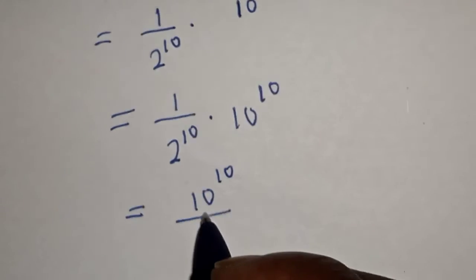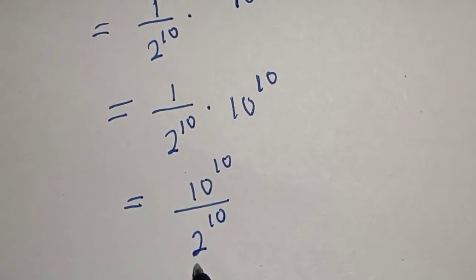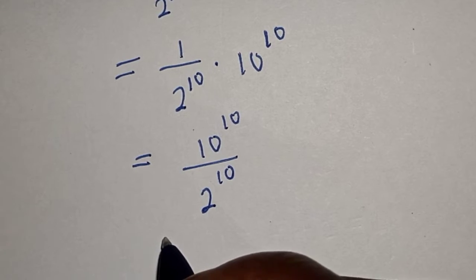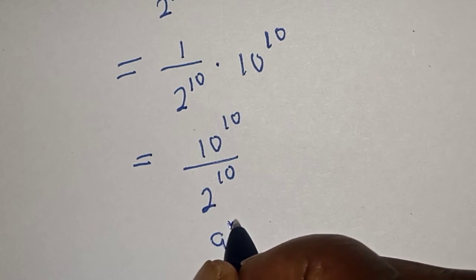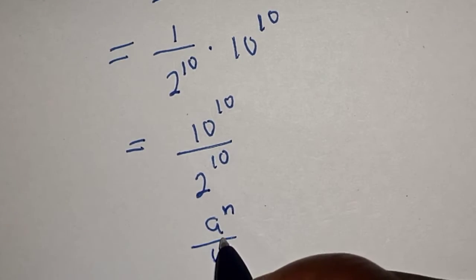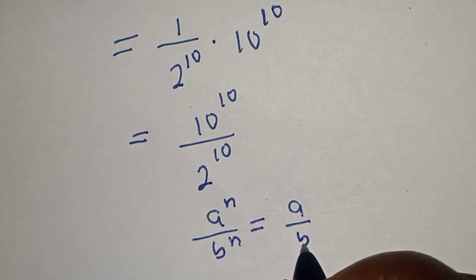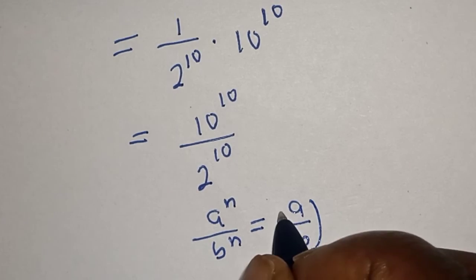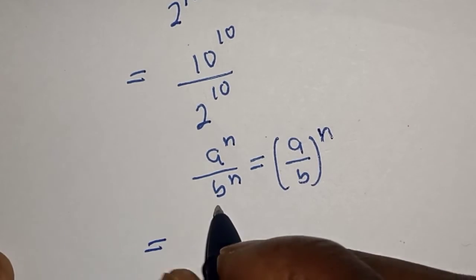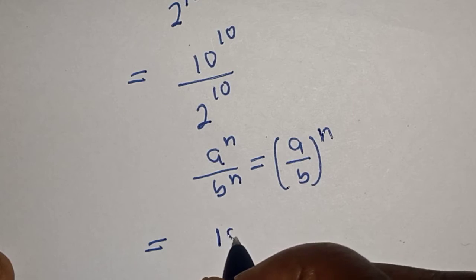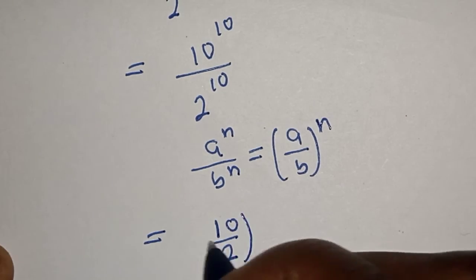Take note of this rule: a raised to power n over b raised to power n is equal to a over b, raised to power n. And here is 10 over 2, raised to power 10.